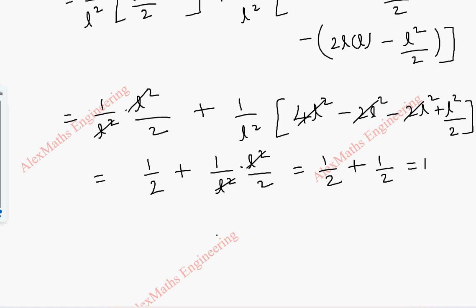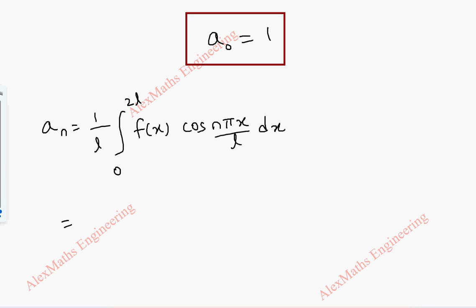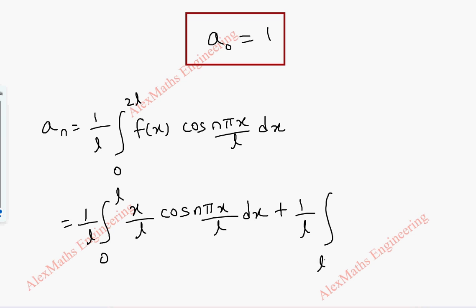After cancelling we have 1 by 2 plus 1 by 2 which equals 1, so a₀ equals 1. Now for the next part we find aₙ. The aₙ formula is 1 by L integral 0 to 2L of f of x into cos(nπx/L) dx. Again f of x has two parts: from 0 to L the function is x by L, and from L to 2L it is (2L minus x) by L.